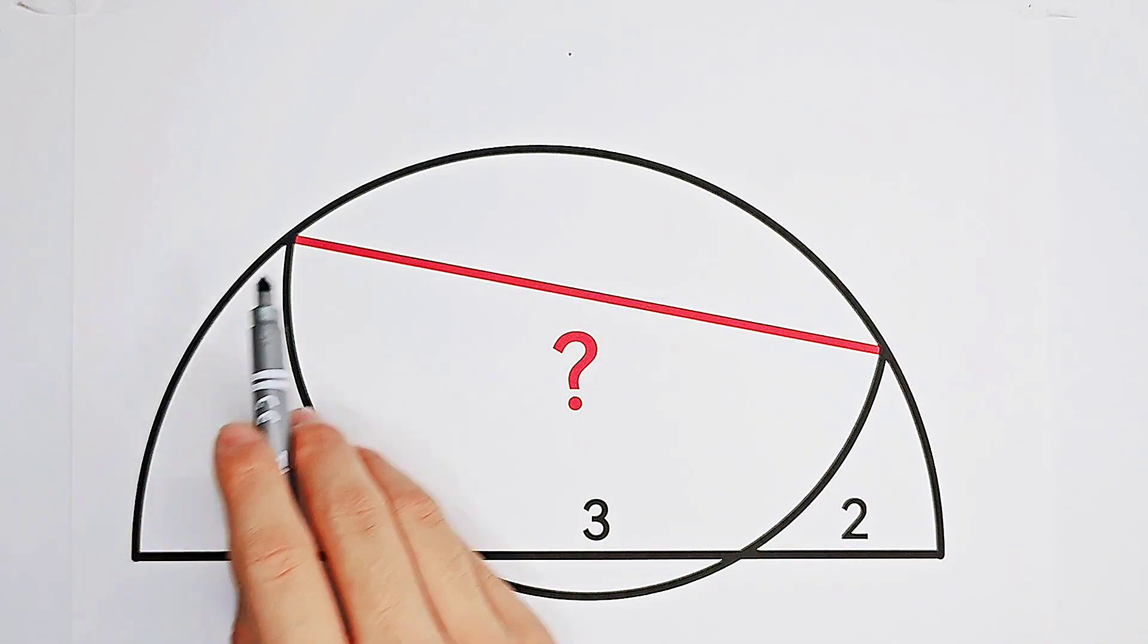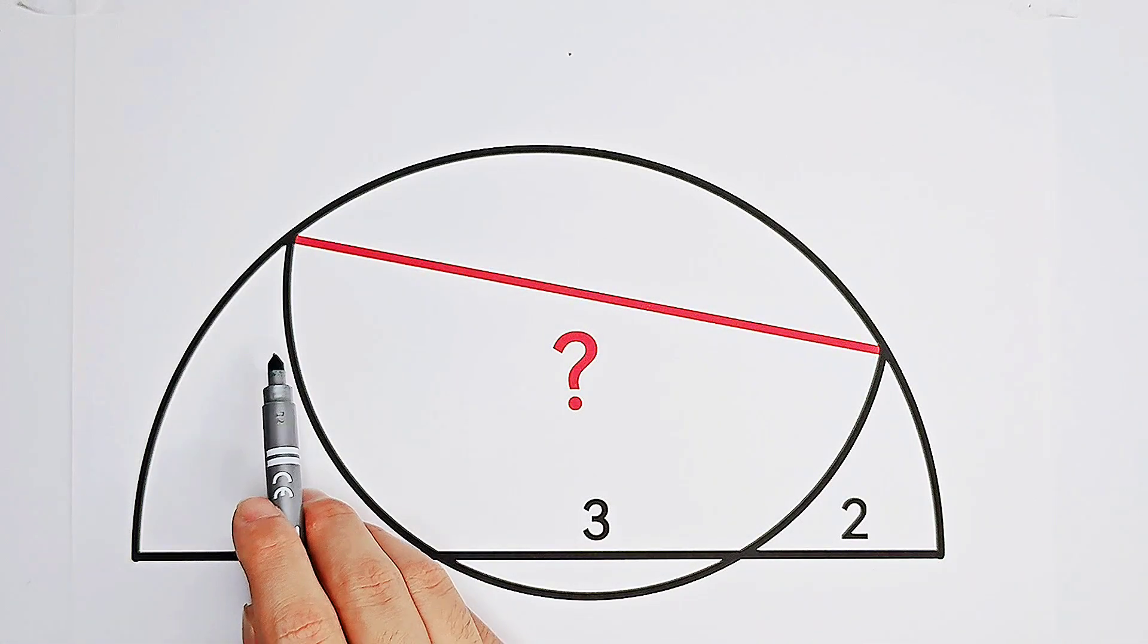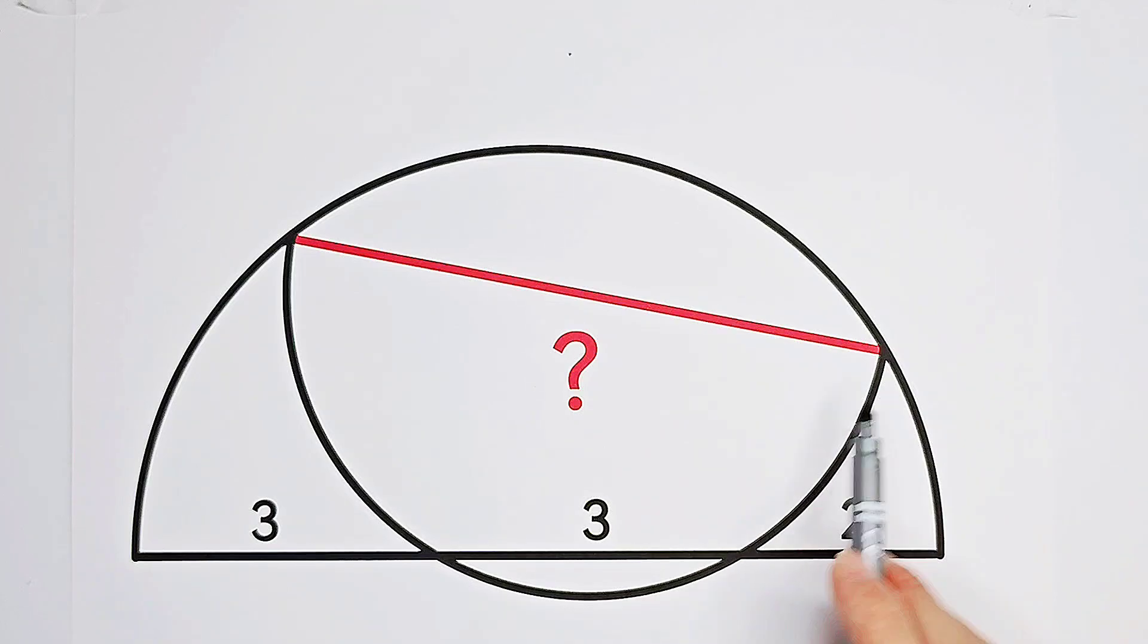Here is a big semicircle. In the big semicircle, there is a small semicircle whose arc cuts the diameter of the big semicircle in three pieces, which measure 3, 3, and 2.